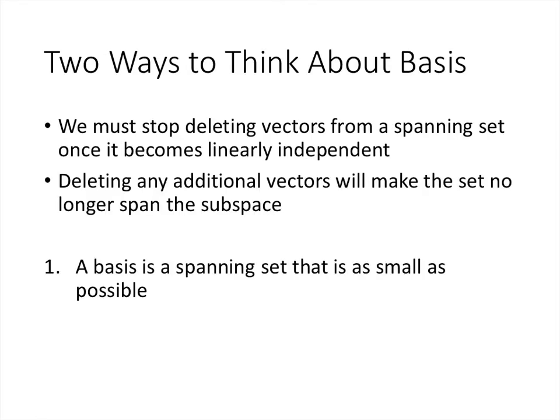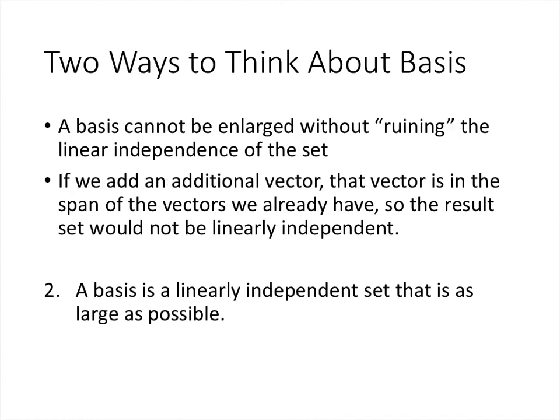There are two ways to think about what a basis is. As we've seen with the spanning set theorem, we stop deleting vectors once those vectors become linearly independent — if we deleted any more, the span would be smaller than what we want. So a basis is a spanning set that is as small as possible. On the flip side, if we tried to add vectors to a basis, any additional vector is already in the span of the vectors we have, so the set would no longer be linearly independent. So a basis is also as large as possible while still maintaining linear independence.